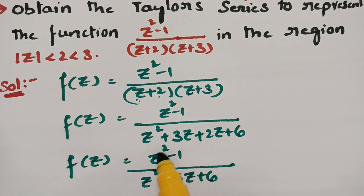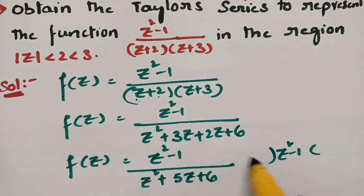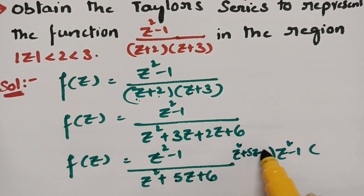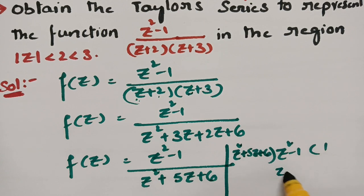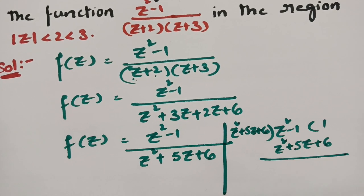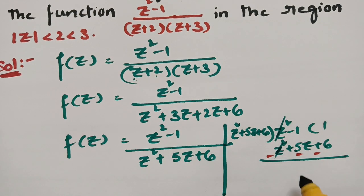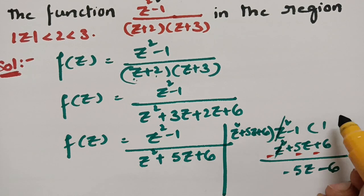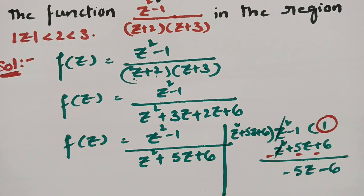The degree of the numerator is 2 and the degree of the denominator is 2. If I divide z²-1 by z² + 5z + 6, it goes in one time. So z² + 5z + 6, and after subtracting, z² cancels and we get -5z - 6. The quotient here is 1.